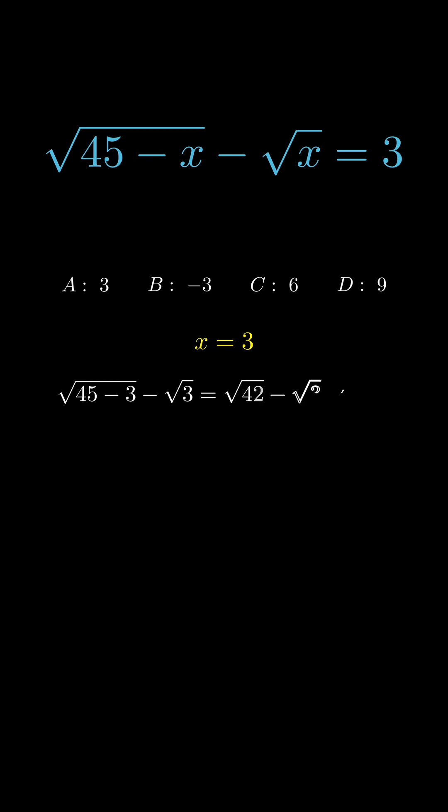Start with the first option of 3. That gives square root of 43 minus square root of 3. This gives 4.75, which is too big.